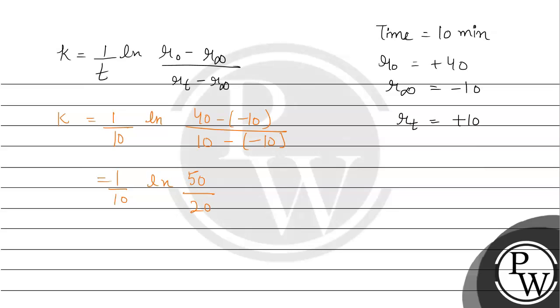Now the point is time given is in minutes and according to the question we have to find the rate constant in seconds. So we will convert the minute into seconds, multiply 60. One minute is 60 seconds, so 10 minutes is 10 multiplied by 60.